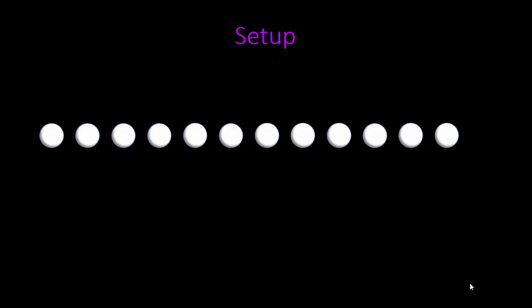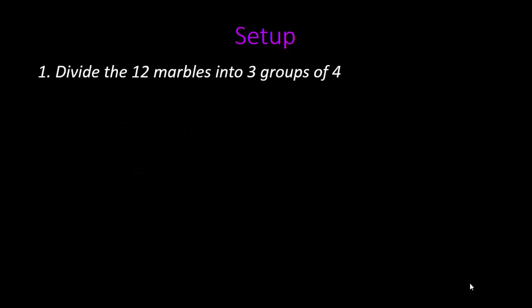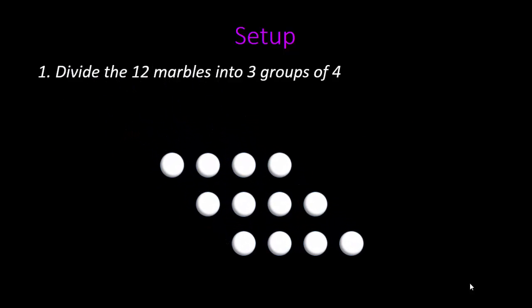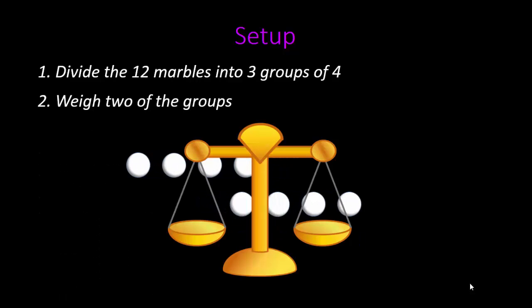Before we perform our first weighing, we have no information about any of the marbles, so we start with 12 white ones. Now let's set up our first weighing. We first want to divide the 12 marbles into three groups of four. Next, we weigh two of the groups against each other.